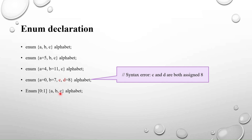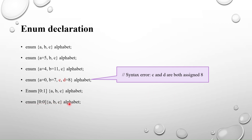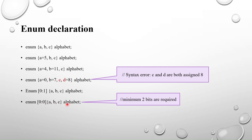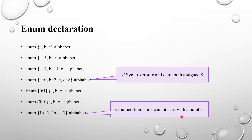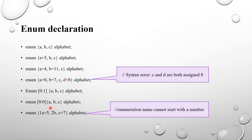With three elements valued 0, 1, 2, a 2-bit width is sufficient. However, if you declare enum [0:0] with three elements, it is an error — at least two bits are required to represent values 0, 1, 2. Also, enum element names cannot start with a number or a special character. Finally, we will now look at enumerated type ranges.